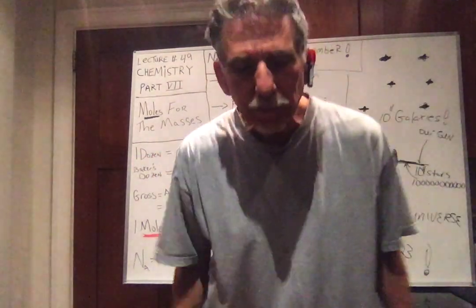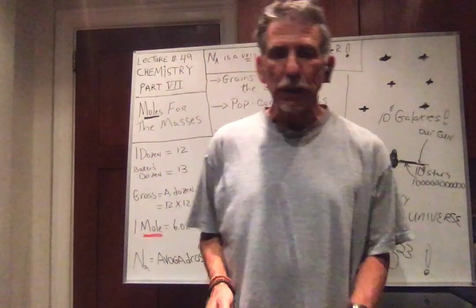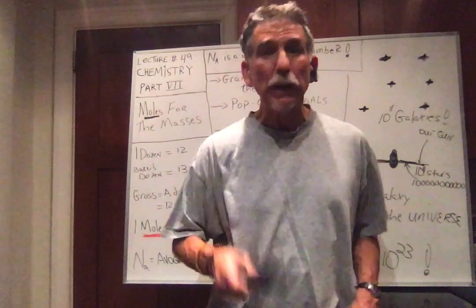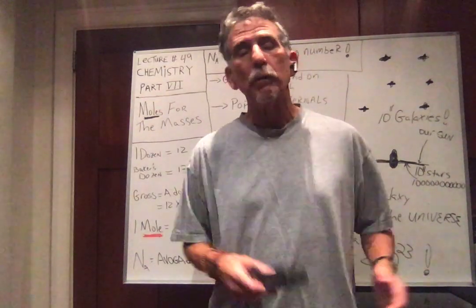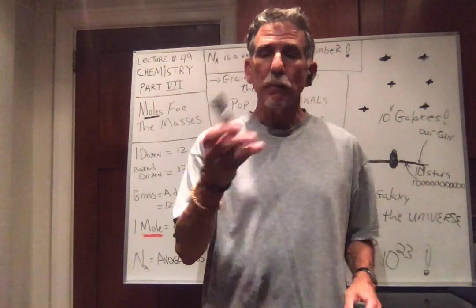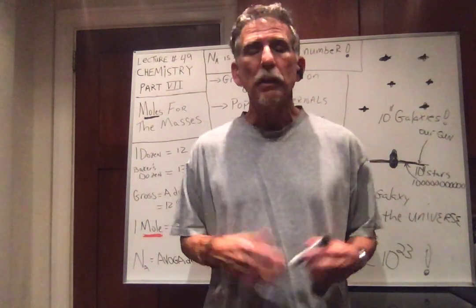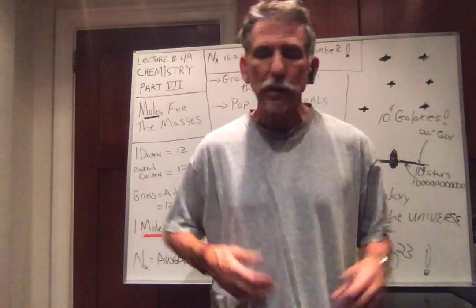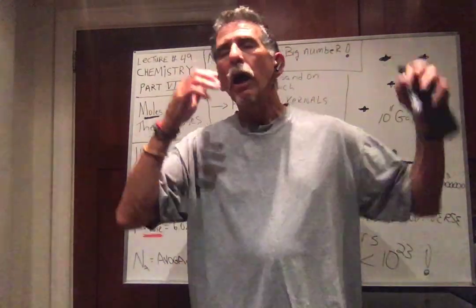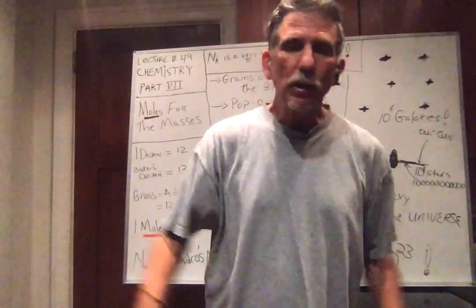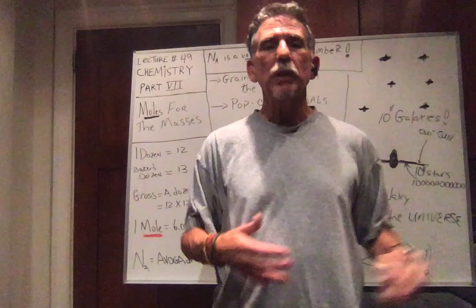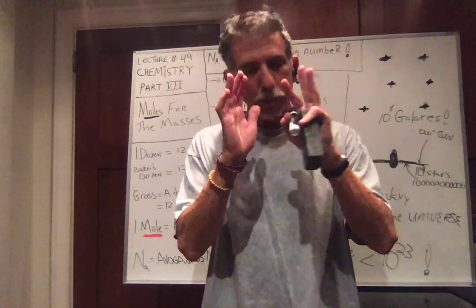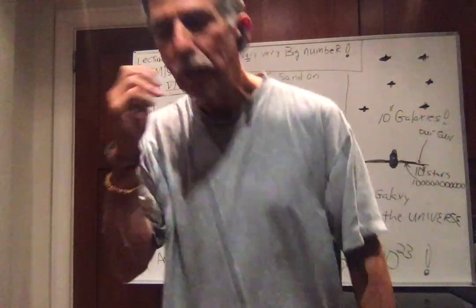One dozen. If we have a dozen of anything, we have 12 of anything. So if I have a dozen erasers, 12 erasers. If I have a dozen pens, 12 pens. A dozen pots, 12 pots. A dozen tables, 12 tables. A dozen chairs, 12 chairs. A dozen is 12. Simple. Piece of cake.